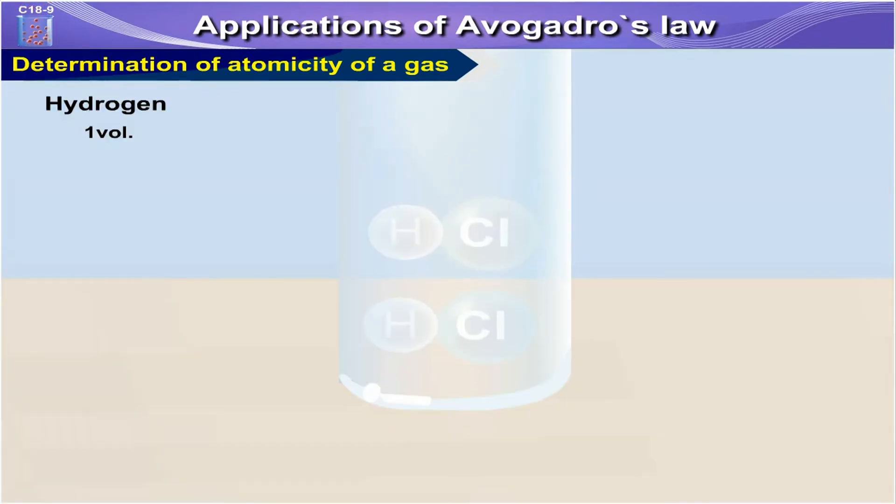So one volume of hydrogen plus one volume of chlorine gives two volumes of hydrogen chloride, which is an experimental truth.